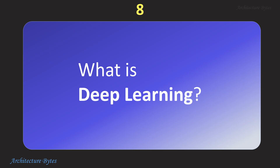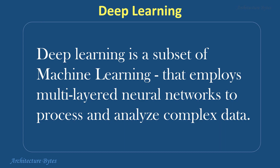What is deep learning? Deep learning is a subset of machine learning that employs multi-layered neural networks to process and analyze complex data. Unlike traditional machine learning, which relies on shallow learning and manually extracted features, deep learning automates feature extraction and learns directly from data. This enables more accurate handling of high-dimensional data such as images, sound, and text.